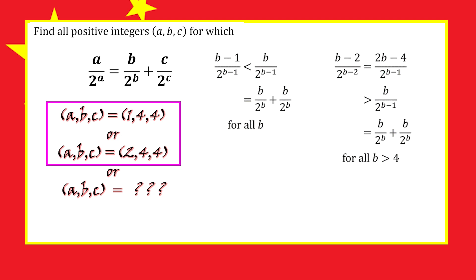If b is greater than 4, then 2b minus 4 is always greater than b, so this number is always larger than our sum. This means if b is greater than 4, we cannot have another solution.